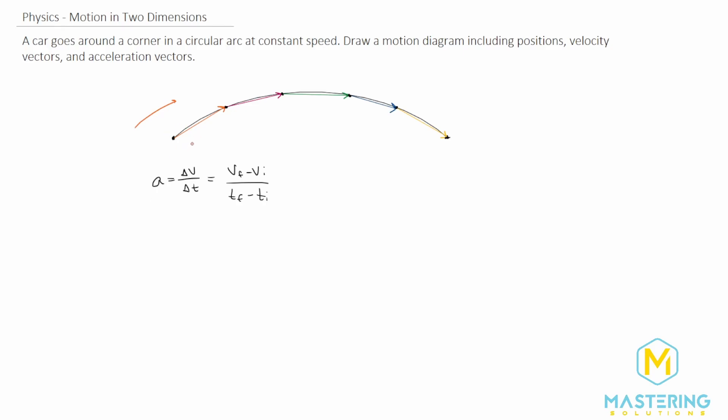If you remember, whenever we subtract vectors, what we do is we take the one that we're subtracting from, in this case, the initial velocity, and we flip it backwards. So we turn it upside down, and then we go tip to tail, and then we draw the resultant vector.